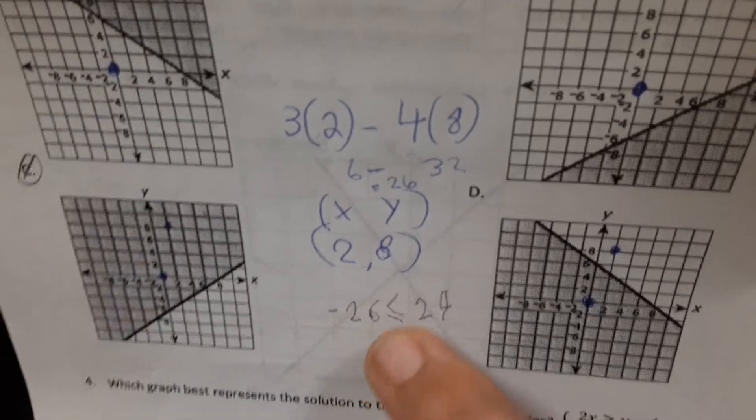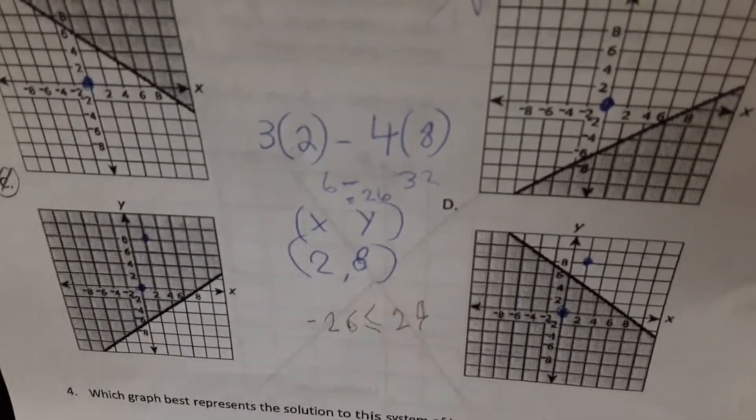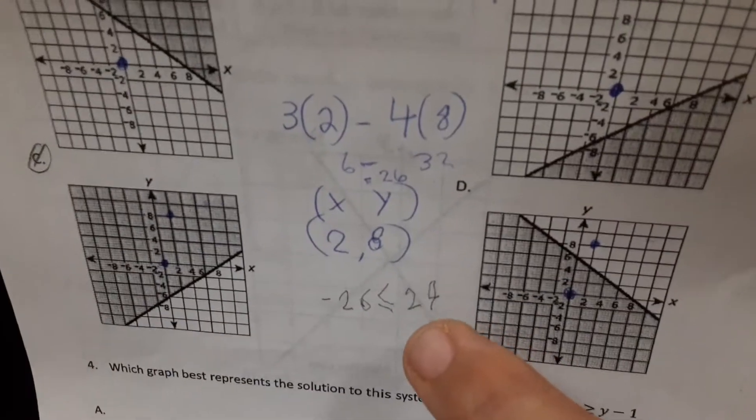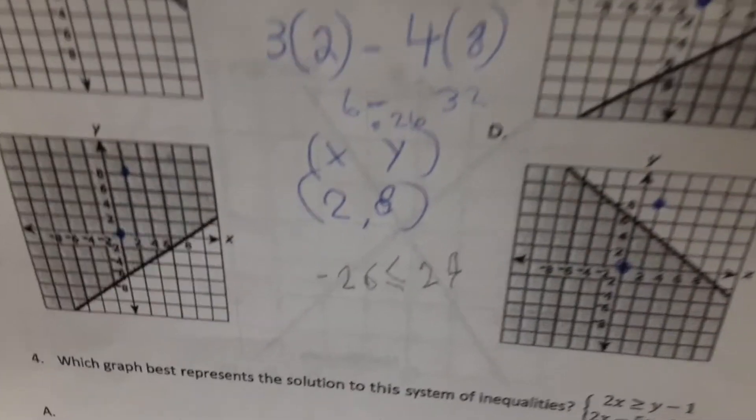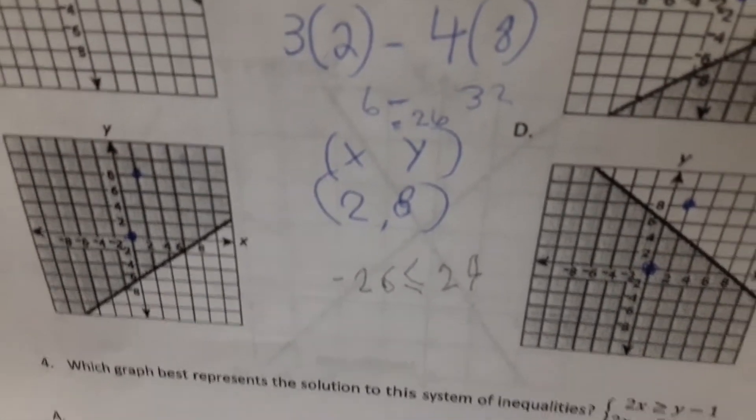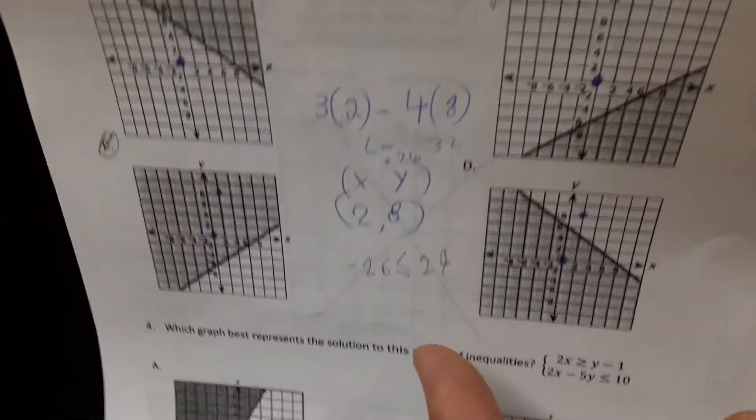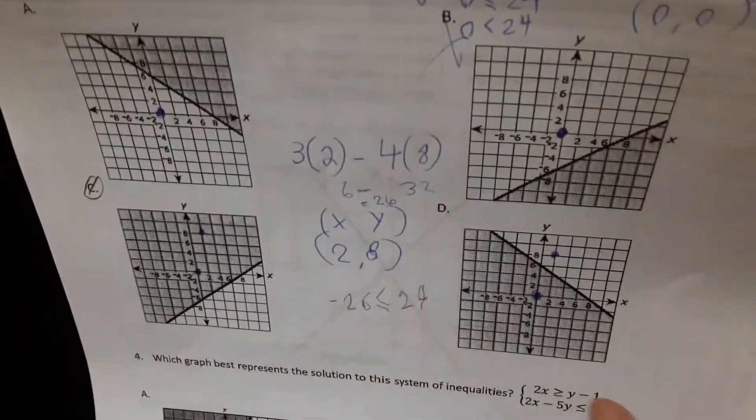So negative 26 is, that's a funny sign there. What is that sign? Looks like an alligator. Greater than or equal to. So how do we read it? Negative 26 is less than or equal to 24. Right. So is that true? Yes. Oh, that's true.